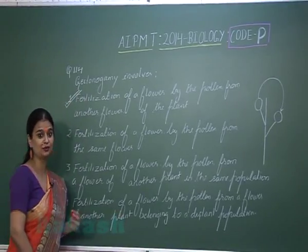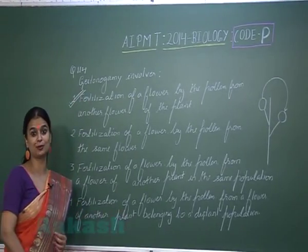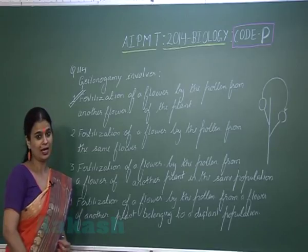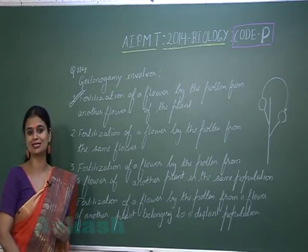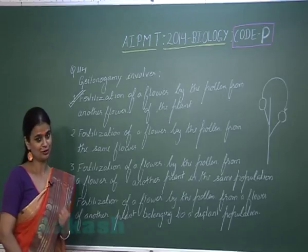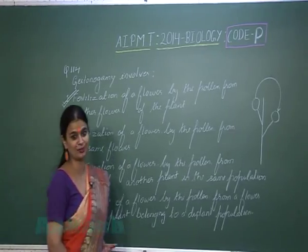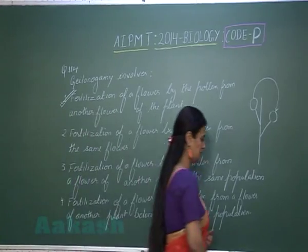The right answer for this question is option number 1. One good example of geitonogamy is maize.